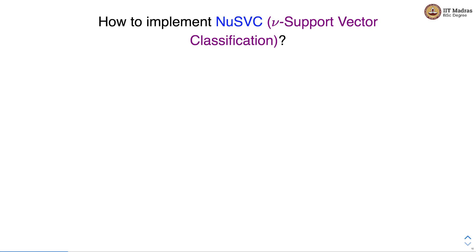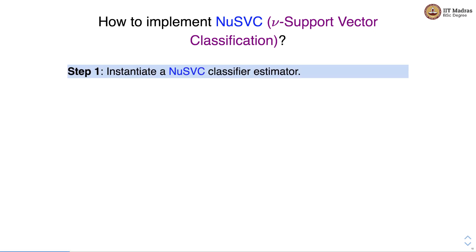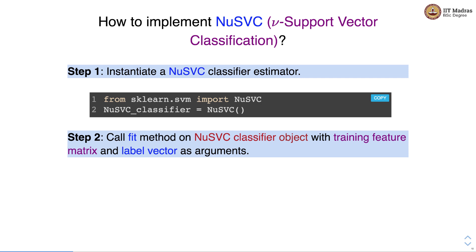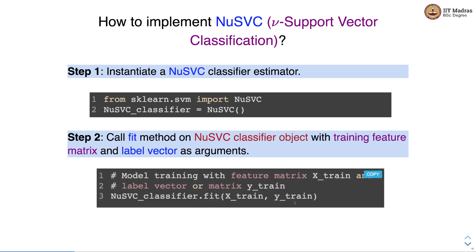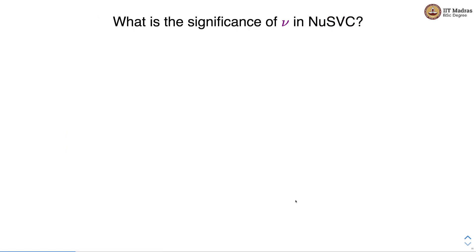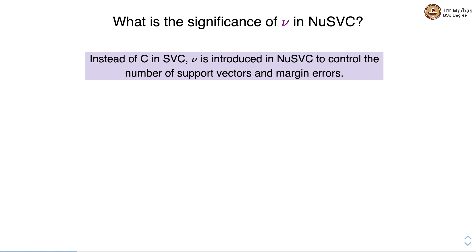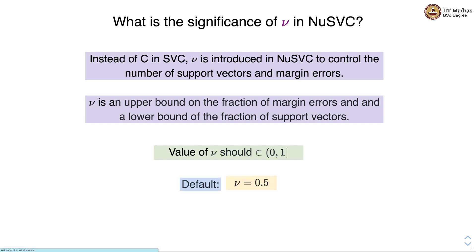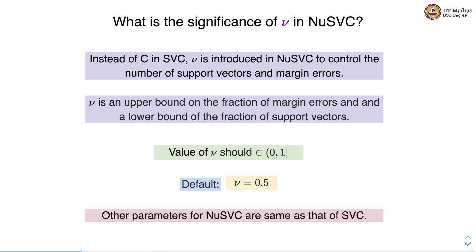Let's see how to implement NuSVC, or Nu-Support Vector Classification. We import NuSVC from sklearn.svm, instantiate the NuSVC object, and call the fit method with training feature matrix and label vectors. Instead of C, NuSVC introduces the parameter Nu to control the number of support vectors and margin errors. Nu is an upper bound on the fraction of margin errors and a lower bound on the fraction of support vectors, and its value must be between 0 and 1. The default value is 0.5. Other parameters for NuSVC are the same as for SVC.